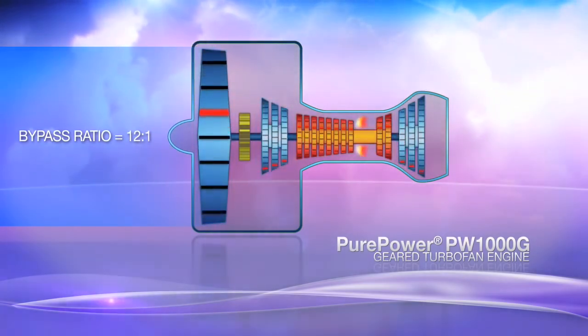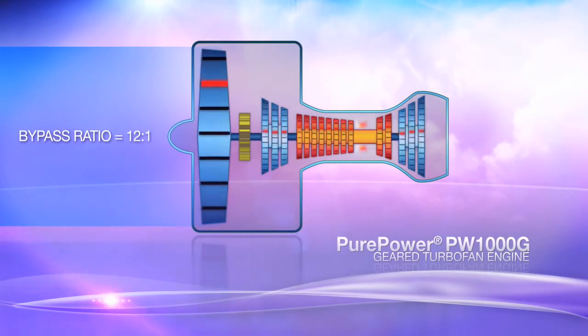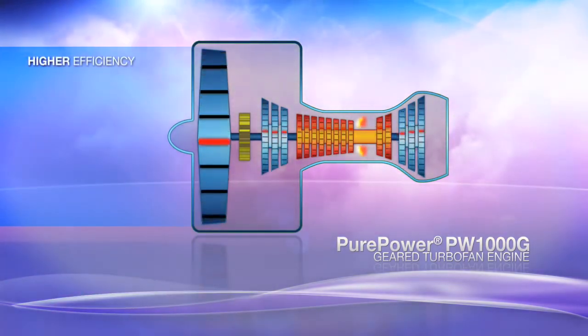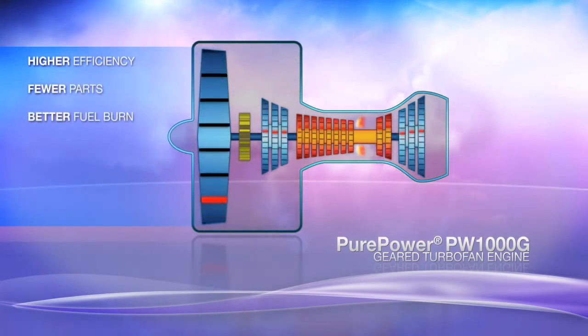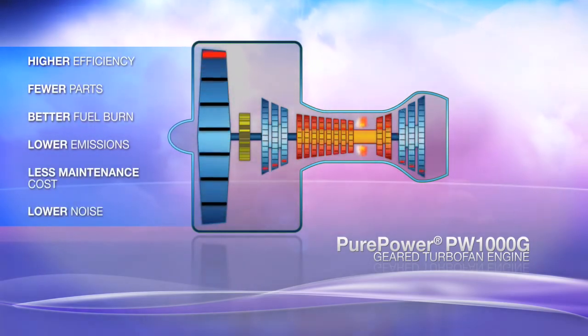There are so many benefits to this approach, we had to make a special section to talk about them all. In brief, the PW1000G engine delivers higher thermal efficiency and higher propulsive efficiency with fewer parts, for better fuel burn, lower greenhouse gas emissions, less maintenance cost and much lower noise.